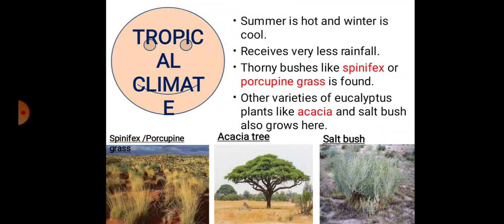The tropical climate region features hot summers and cool winters. This region receives very little rainfall. Due to this, thorny bushes like spinifex or porcupine grass grow here. Other varieties of eucalyptus plants also grow in this region, such as acacia and saltbush.